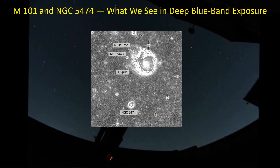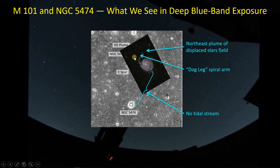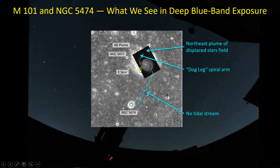Their simulation is actually reproducing a lot of the features we see today. What are those features? Well, the first thing is not what we see, but what we don't see — oftentimes when galaxies interact, there is a tidal stream where one galaxy strips off stars from the other, leaving a bright zone of stars between the two galaxies. Here, in a deep blue-band exposure, there's nothing in that region. What we are seeing is this bent spiral arm and a plume of stars known as the northeast plume. I'm not seeing the northeast plume in my data, but I should be getting that detail if it were bright enough to pull out.